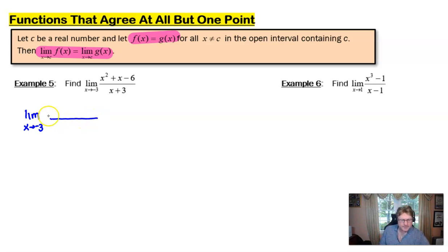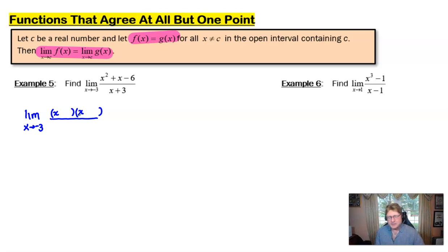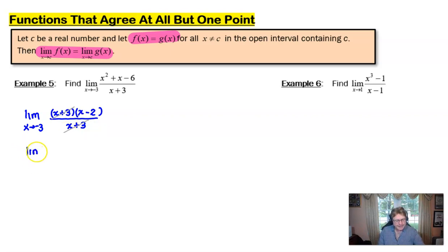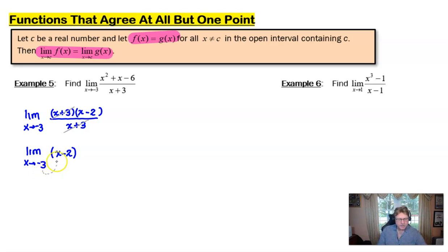Working harder means we're going to factor the numerator. In this case, that factors using three and negative two to give us (x + 3)(x − 2), and I'm happy that (x + 3) is a factor of the numerator because that leads to a cancellation. In my class I ask students to write out the final limit statement before evaluating, so this becomes the limit of (x − 2) as x approaches negative 3. Replacing x with negative 3 gives us negative 5.